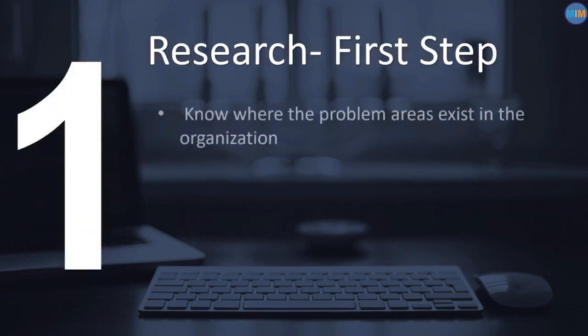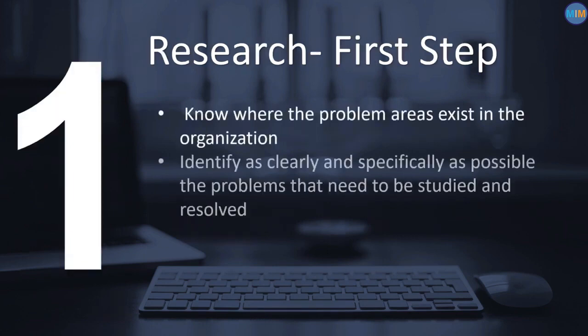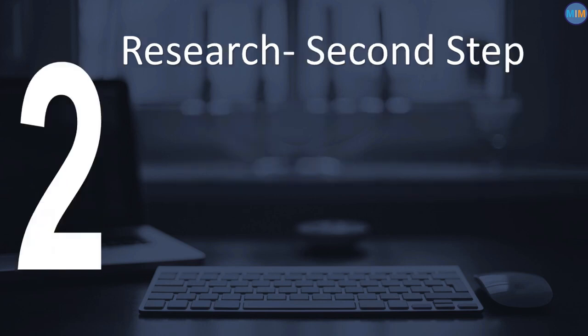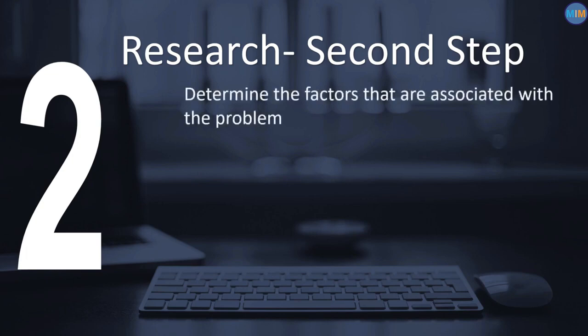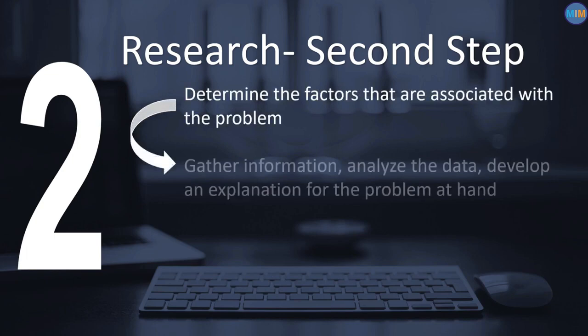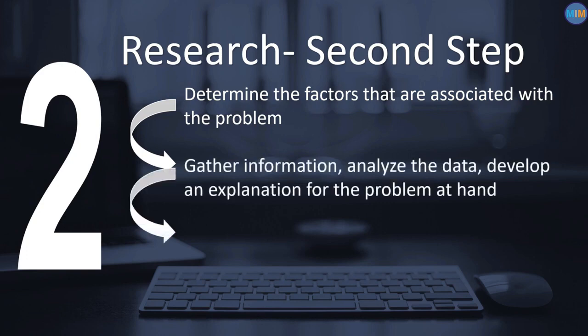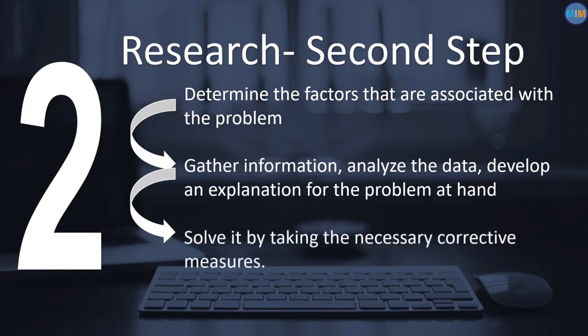This means that the first step in research is to know where the problem areas exist in the organization and to identify as clearly and specifically as possible the problems that need to be studied and resolved. Once the problem is clearly defined, steps can be taken to determine the factors associated with the problem, gather information, analyze the data, and develop an explanation of the problem and then solve it by taking the necessary corrective measures.